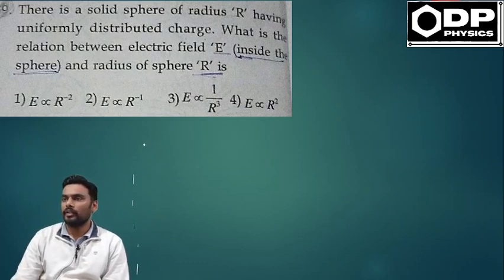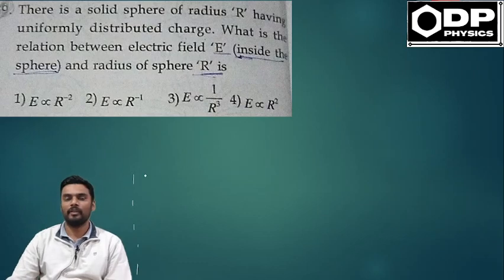There is a solid sphere of radius R having uniformly distributed charge. What is the relation between electric field E inside the sphere and radius of the sphere R? This is a direct question which is based on the formula.